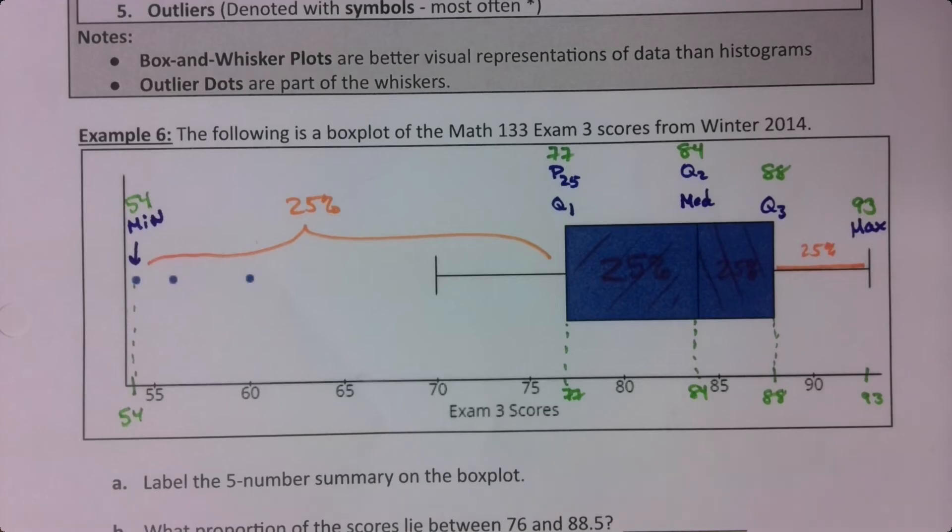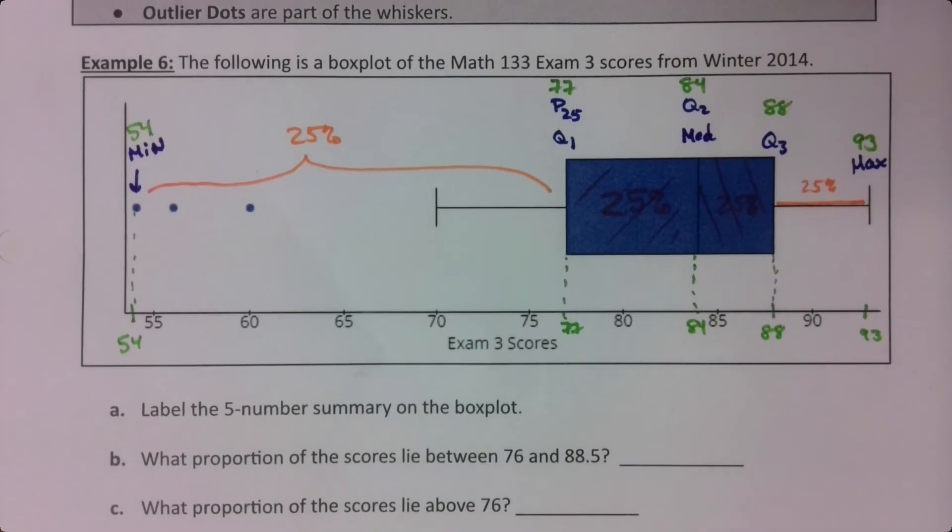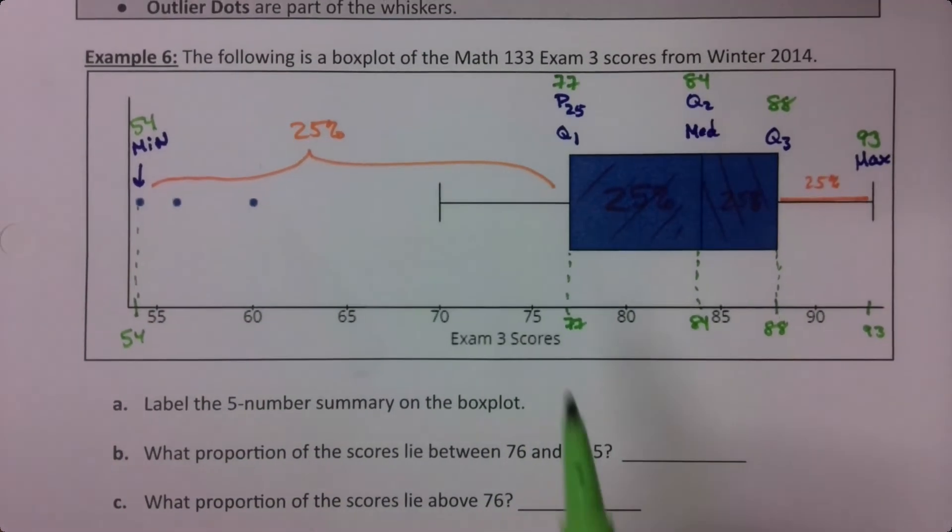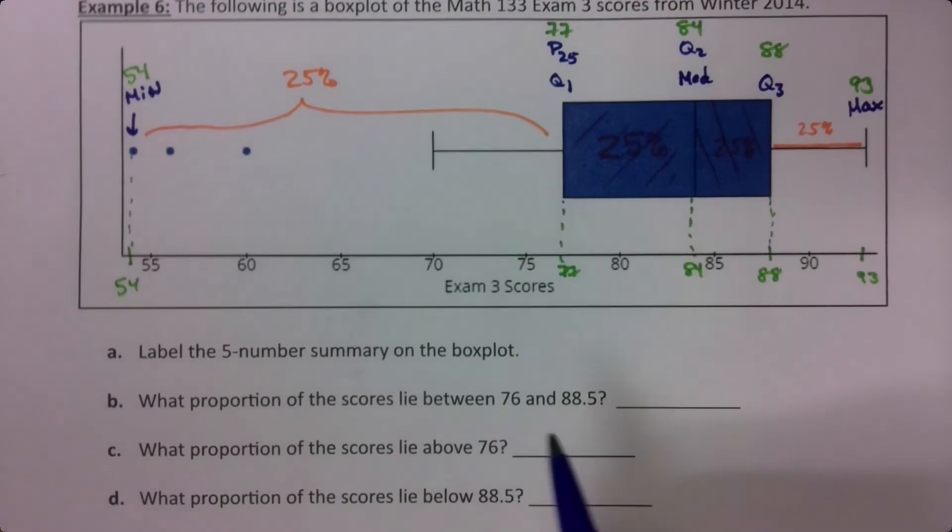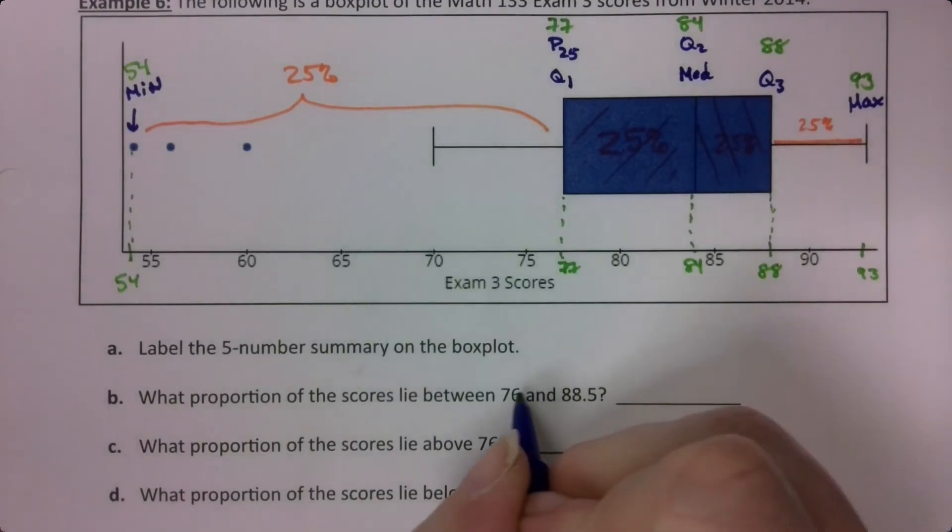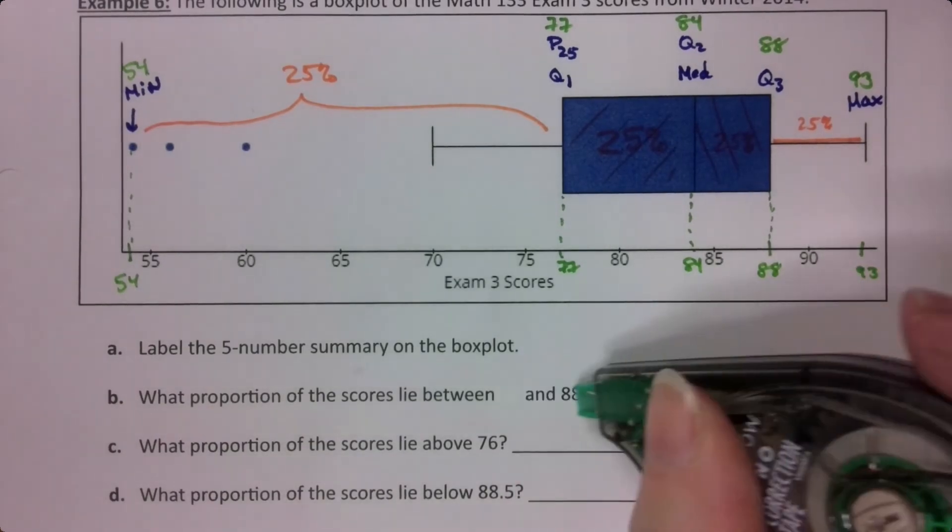We labeled the five-number summary on the plot. Lovely. What proportion of the scores lie between—I'm going to have to change these for future, so I'm going to change these right now. Again, because when I did this I was originally doing this with a TI calculator. So we're going to change these values right now on the fly, and then next semester they will be correct. I think I was going for between Q1, which is 77, and Q3, which is 88.